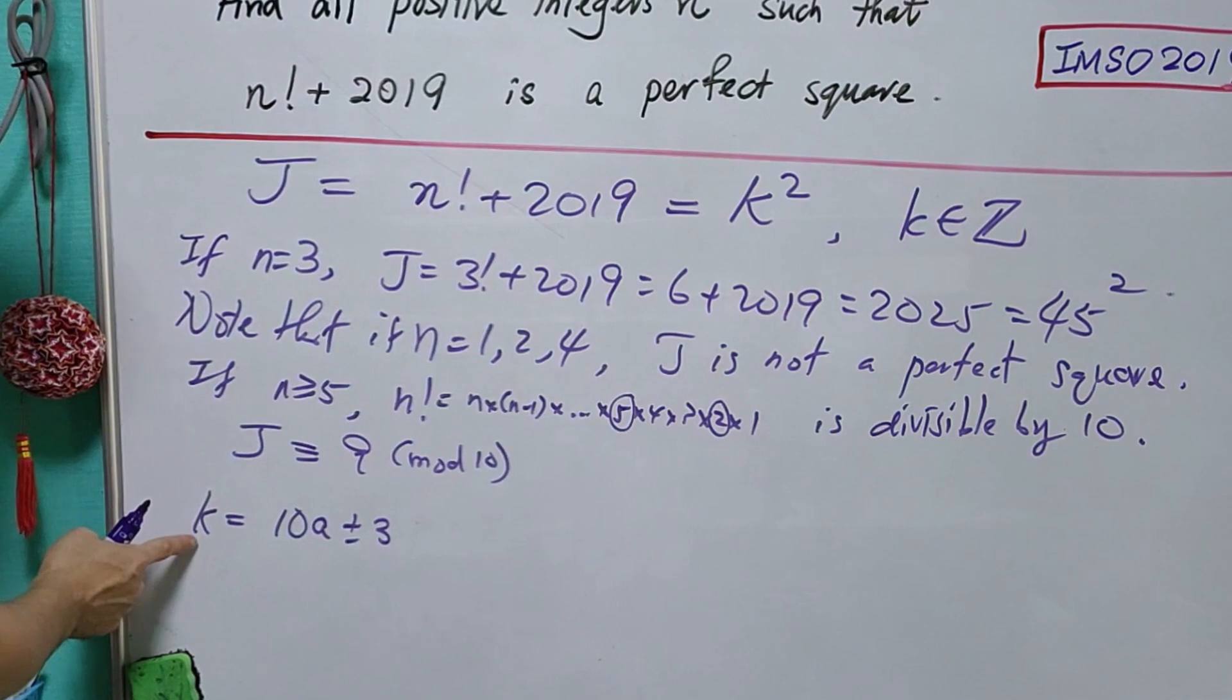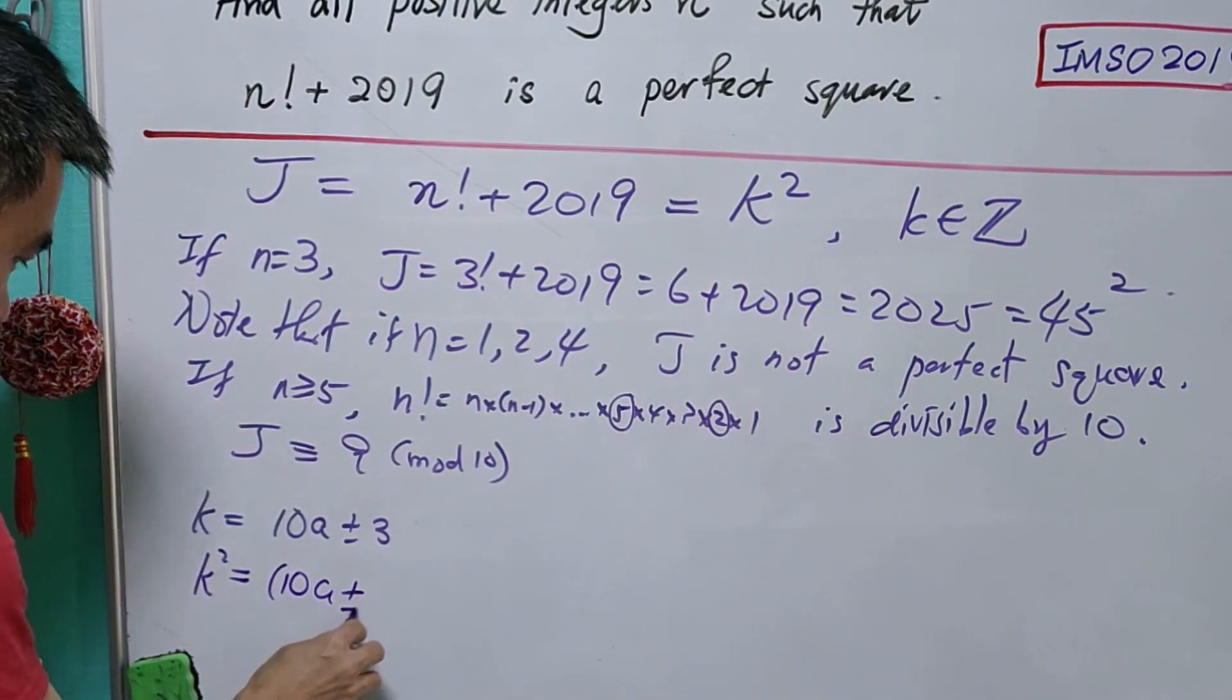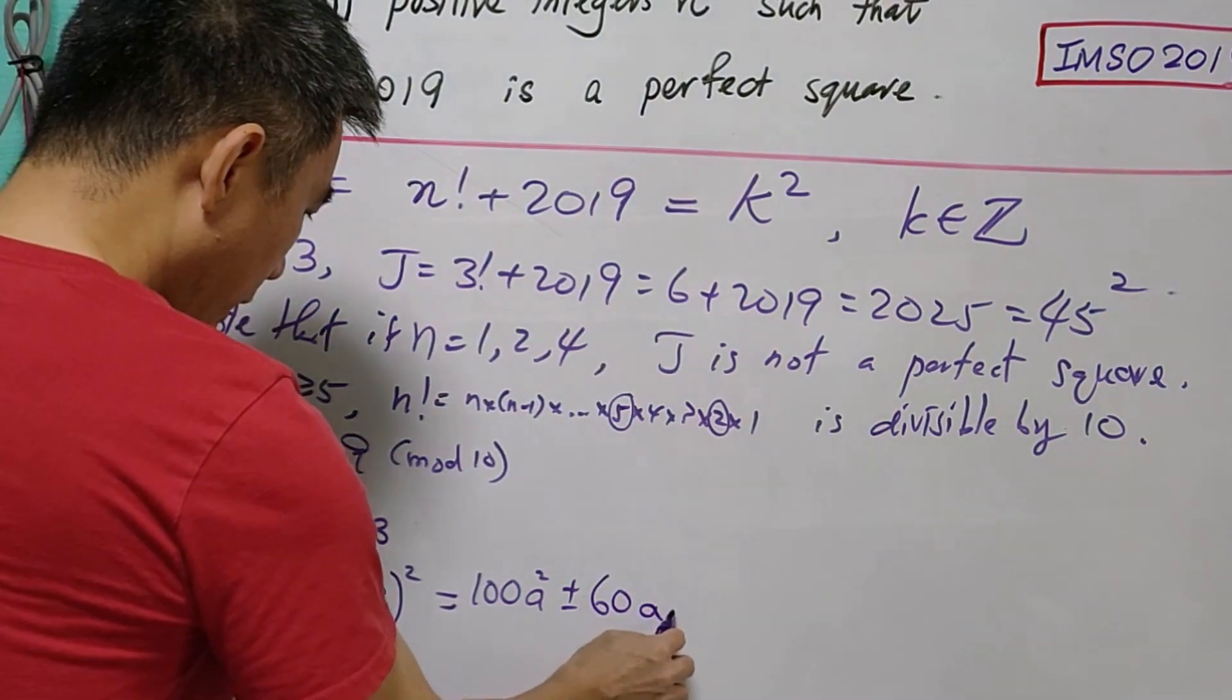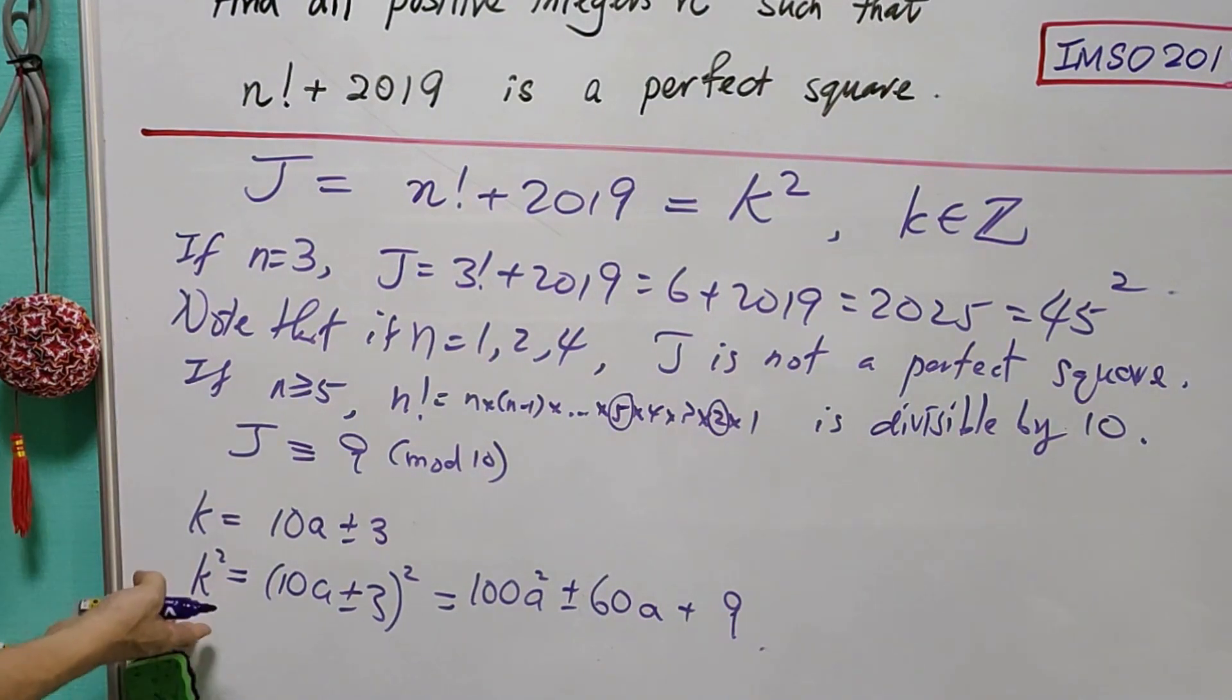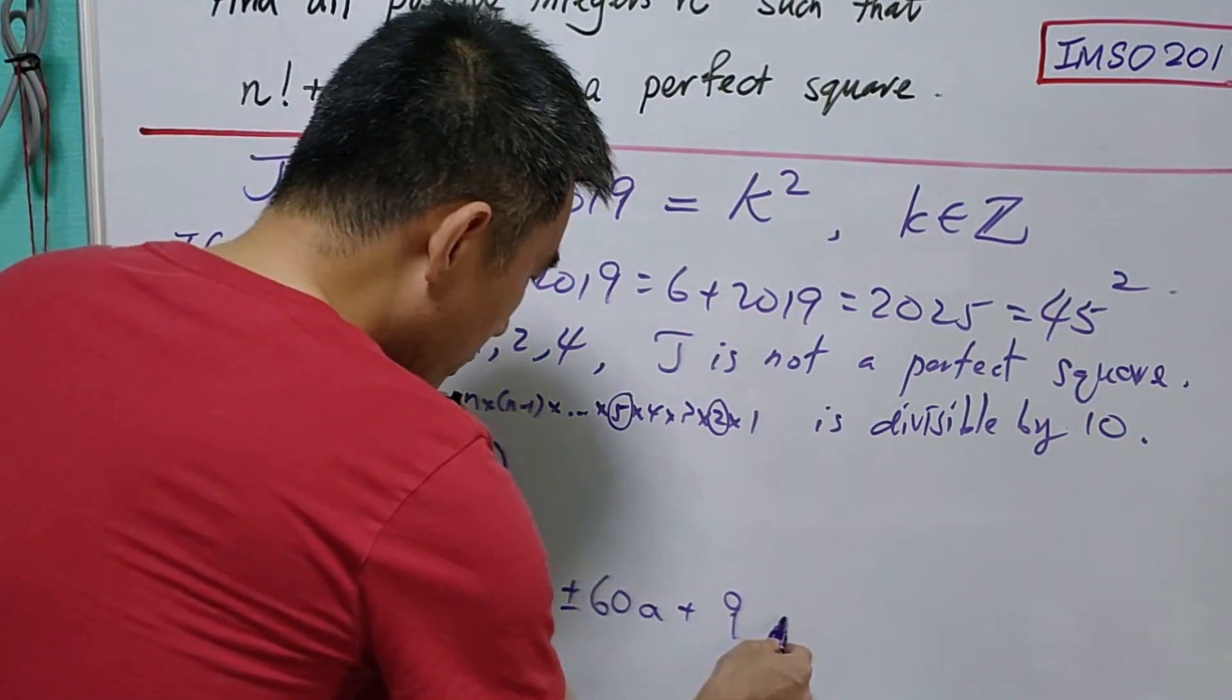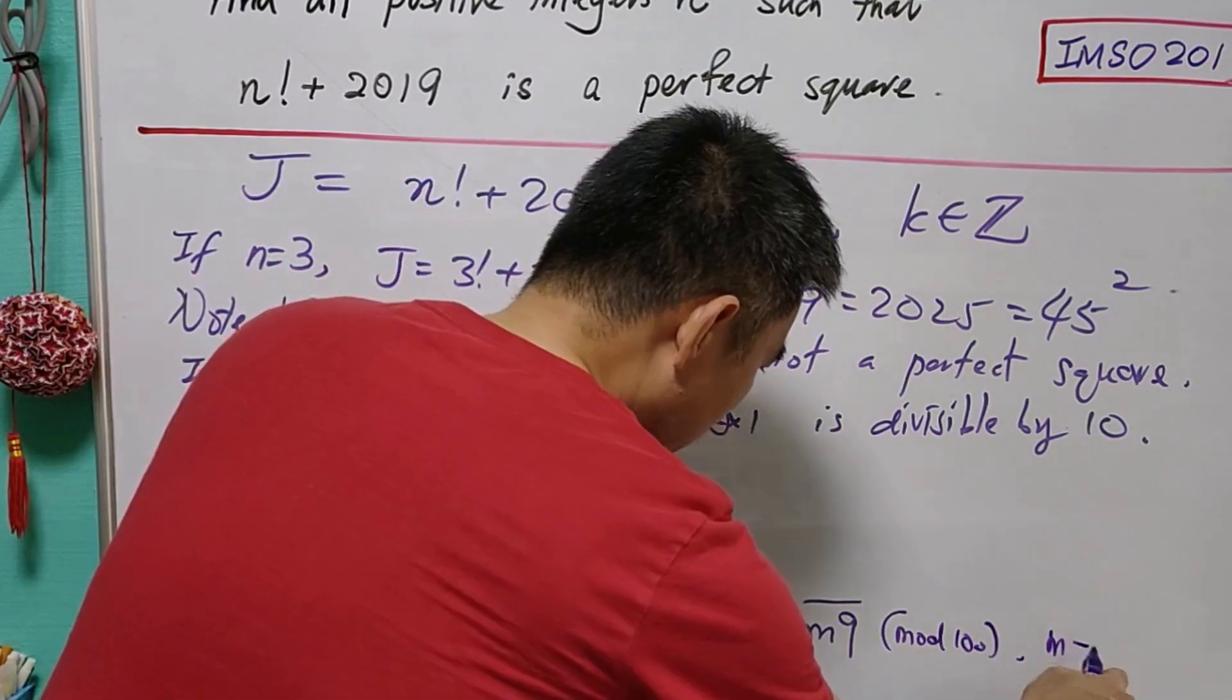So the last digit of k is either 3 or 7. This means k² = (10a ± 3)² = 100a² ± 60a + 9. Now we are going to consider the last two digits of k². Then we will know that the tens digit of k² will be an even number. So the last two digits of k² will be m9, where m is an even number.